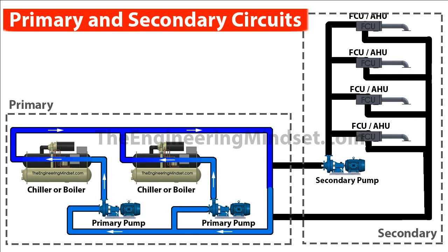The reason primary pumps are typically constant volume — or if variable speed, must meet a minimum flow rate — is because chiller and boiler manufacturers set a minimum flow rate that these units must have in order to work. If the flow rate drops below this minimum, the heat transfer tubes inside the chillers and boilers will burst, breaking the machine and taking the entire heating or cooling system out of action.